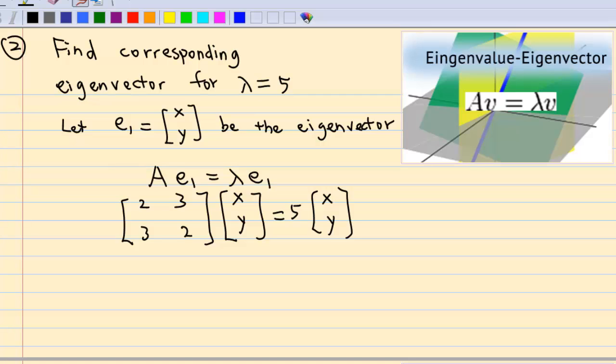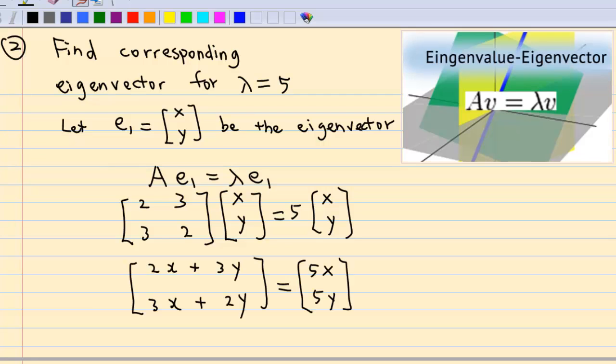Multiply the left hand side and right hand side, I have 2x plus 3y, 3x plus 2y on the left hand side, 5x, 5y on the right hand side.